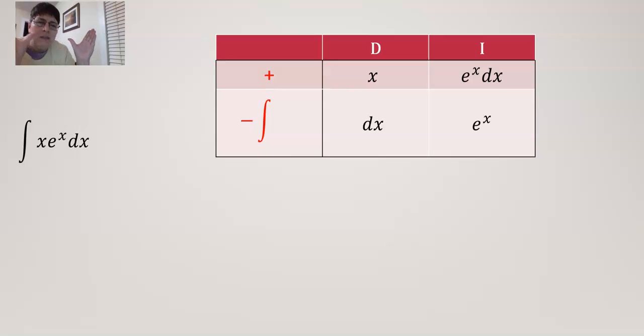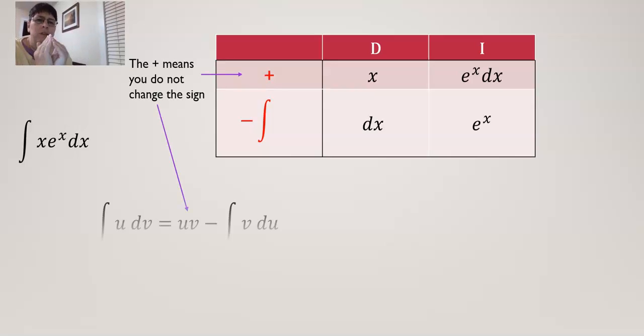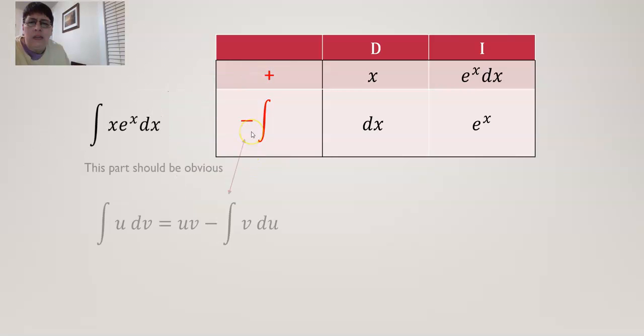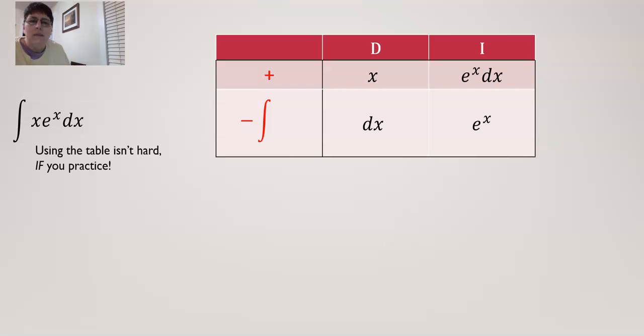And we abbreviate with D for derivative and I for integral. And this plus and minus column right here is important. The plus sign means you're not going to change the sign for the first term, and right here we're going to be subtracting the integral for the second part. So how do you use the table? Well, you have to practice it for one.